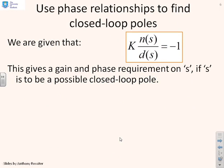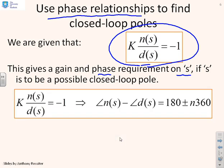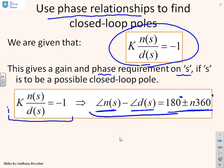There's one other relationship that you might find useful and that's the phase relationship. If we look at the closed loop pole definition, we said we could use Kn over d equals minus 1. This expression actually gives us a phase requirement on the values of s which could be possible closed loop poles. If you look at Kn over d equals minus 1, that tells you that the argument has to be 180 plus or minus 360 degrees.